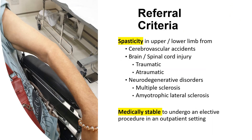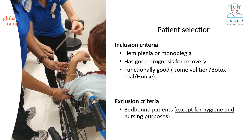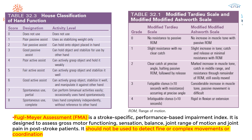Our referral criteria for spasticity are not confined to stroke — we also accept those with spinal cord injuries, neurodegenerative disorders, and cases of post-psychotic medication dystonia. For surgical intervention, we only consider patients who are functionally good and able to perform in society. Bed-bound patients are not included unless for hygiene and nursing purposes. We use the House classification to measure hand function and the Modified Ashworth Scale for the extent of spasticity, though these instruments do not comprehensively measure the psychosocial and biological impact on the patient.